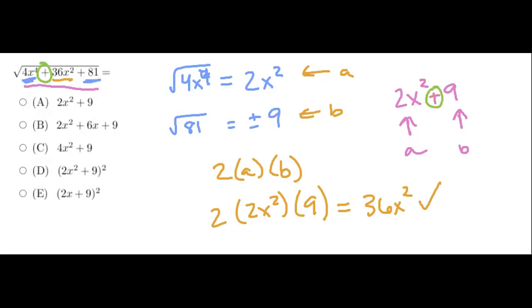And so now we're actually done factoring our perfect square trinomial. So just to bring that back around, I'm going to just rewrite it with a clear screen. So we have 4x to the fourth plus 36x squared plus 81 is equal to 2x squared plus 9 squared.